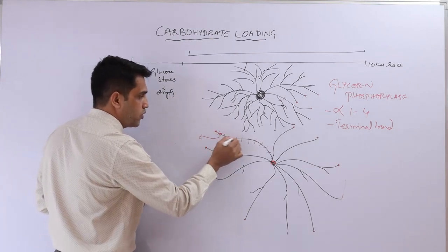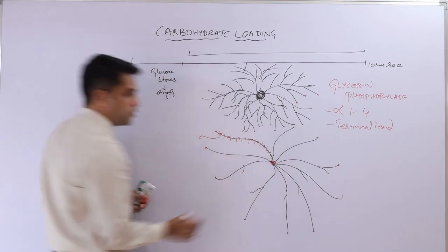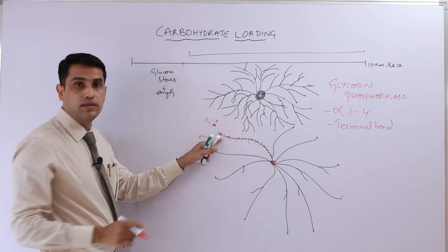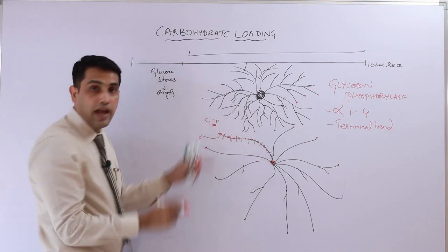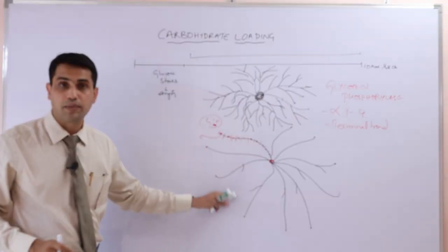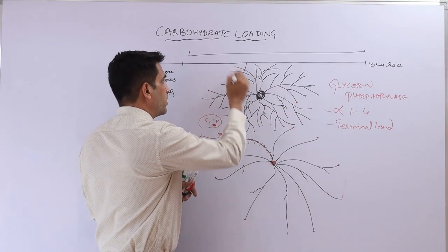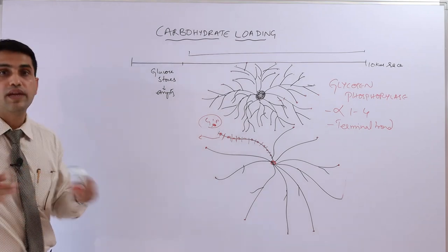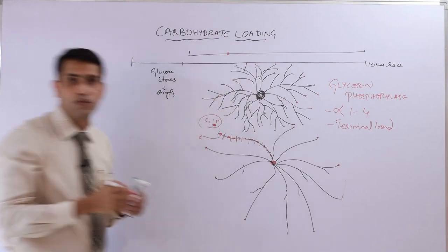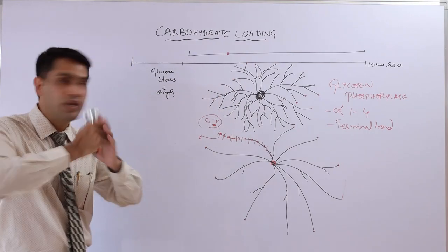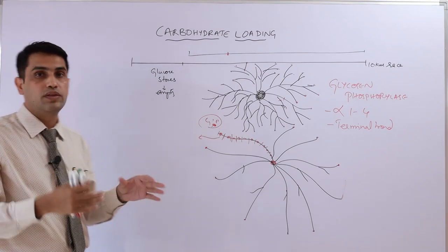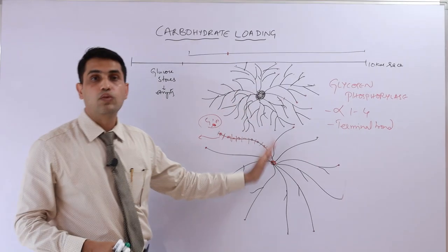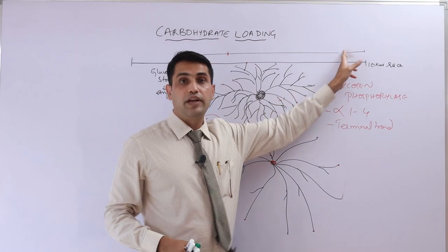The glycogen phosphorylase acts from the terminal end, removing glucose-1-phosphate one at a time — first one, then the next, slowly releasing glucose-1-phosphate molecules. In a highly branched glycogen, many phosphorylase molecules act simultaneously and release all glucose immediately. In contrast, glycogen with very long chains and fewer branches releases glucose units very slowly, which can be utilized over a period of time.